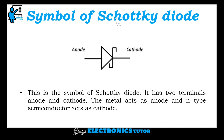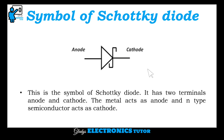This is the symbol of the Schottky Diode. It has two terminals: anode and cathode. The metal acts as the anode and the N-type semiconductor acts as the cathode.